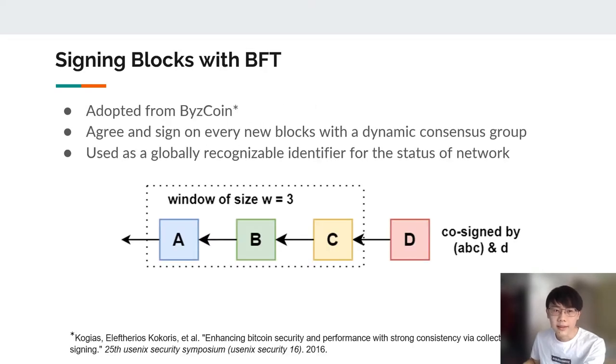We adopted a design from Basecoin that combines Byzantine Fault Tolerance BFT with blockchain for stronger consistency. The main idea is that every new block will be verified and signed by a dynamic consensus group. The new block will be considered committed once being signed without waiting for several blocks after that. In Basecoin, the group is formed by miners of previous W blocks and the miner of the new block itself. Here, the window size W is 3, so block D will be signed by 3 previous miners, A, B, C and itself D. We use this signature as a global recognizable identifier for the status of network.